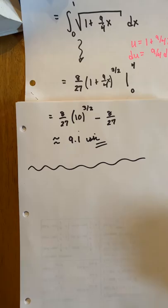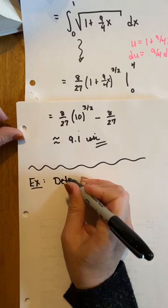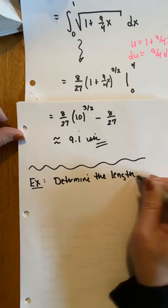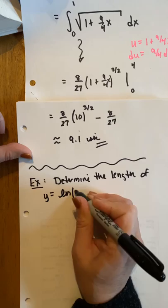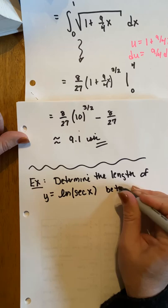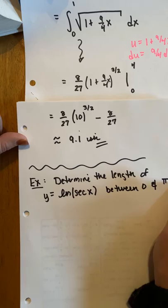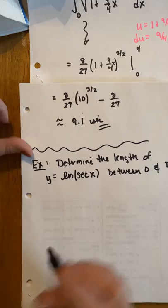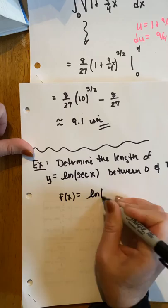Let's do, determine the length of, let's see which one I like better. Determine the length of, let's get wild and crazy, the natural log of the secant of x between 0 and pi over 4. Look how we doing on time, perfect.